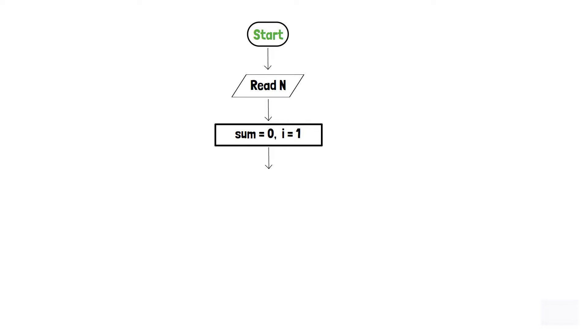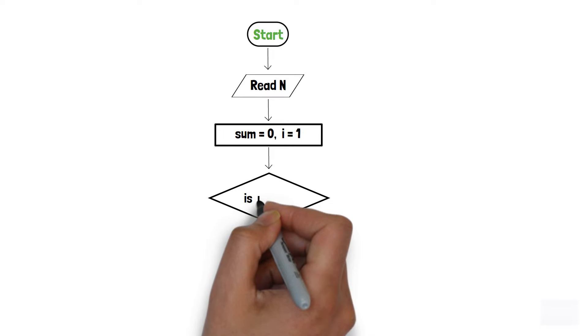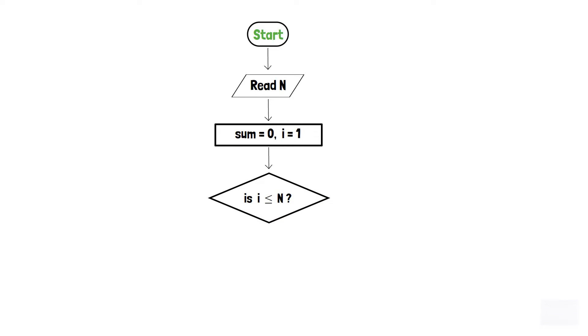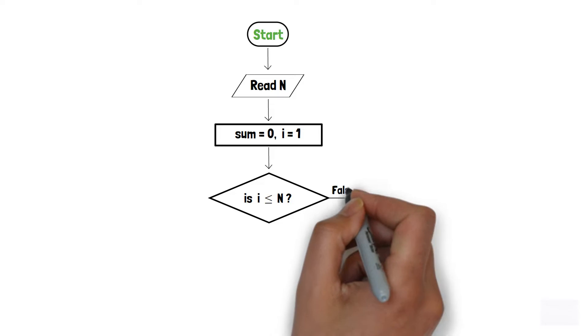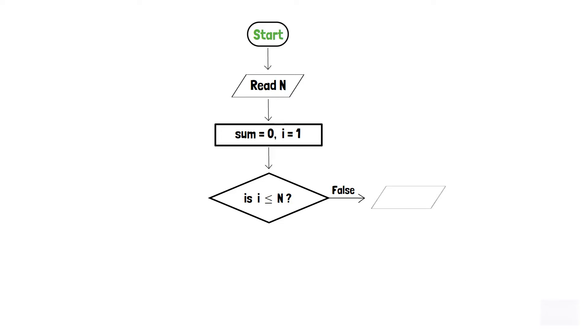After that, we will create a decision box and check whether i is less than or equal to n or not. If i is not less than or equal to n, we will print the variable sum using the output component and end the program with the end terminator.